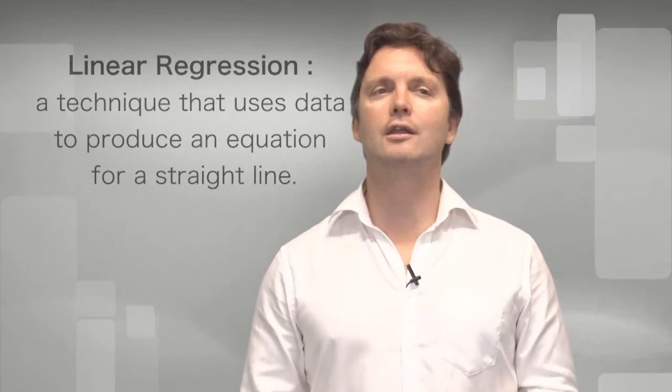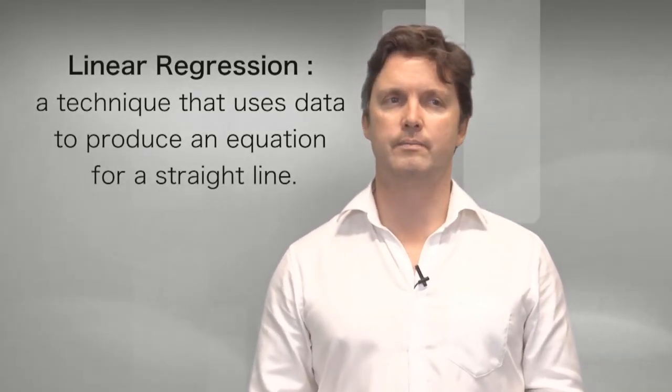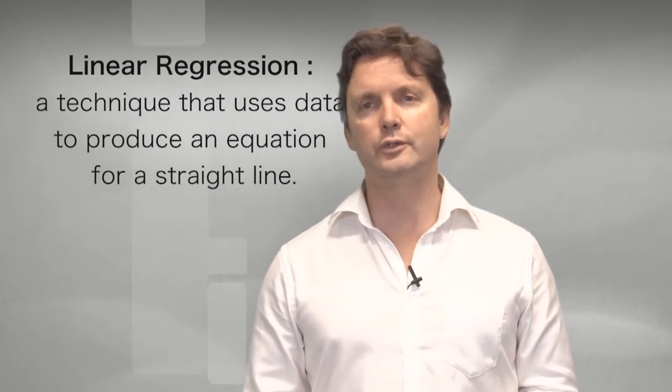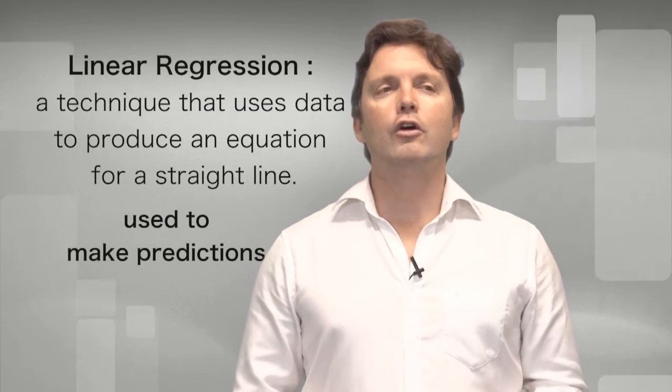Now linear regression is a technique that uses data to produce an equation for a straight line. This equation is used to make predictions. Now not only can you compute the degree to which two variables are correlated by computing the correlation coefficient, but you can use these correlations as a basis for the prediction of the value of one variable from the variable of another.